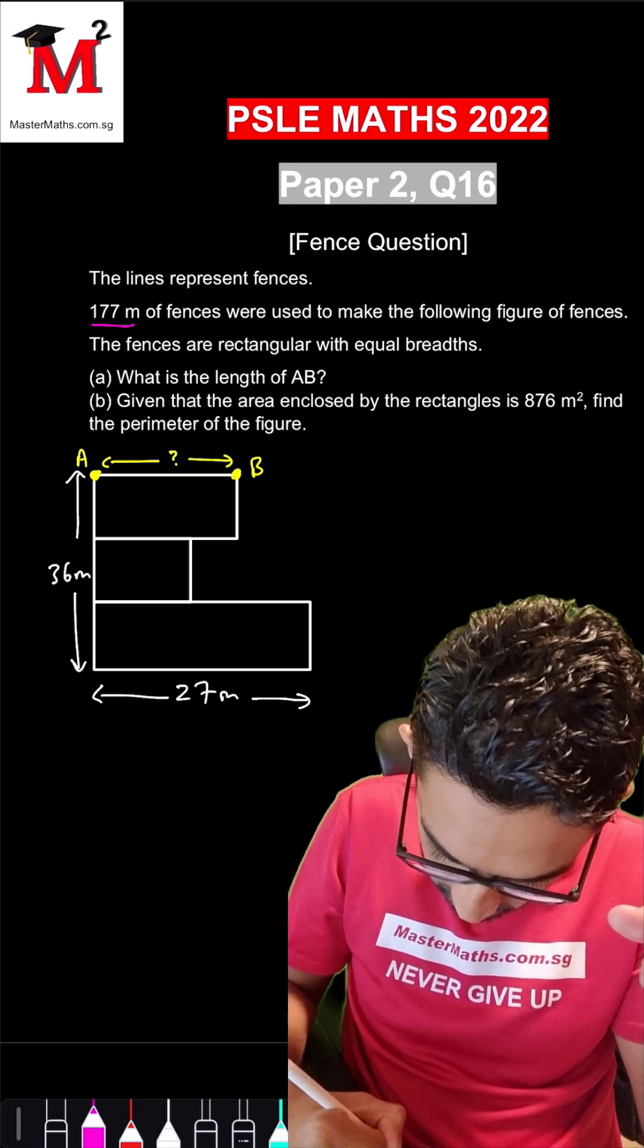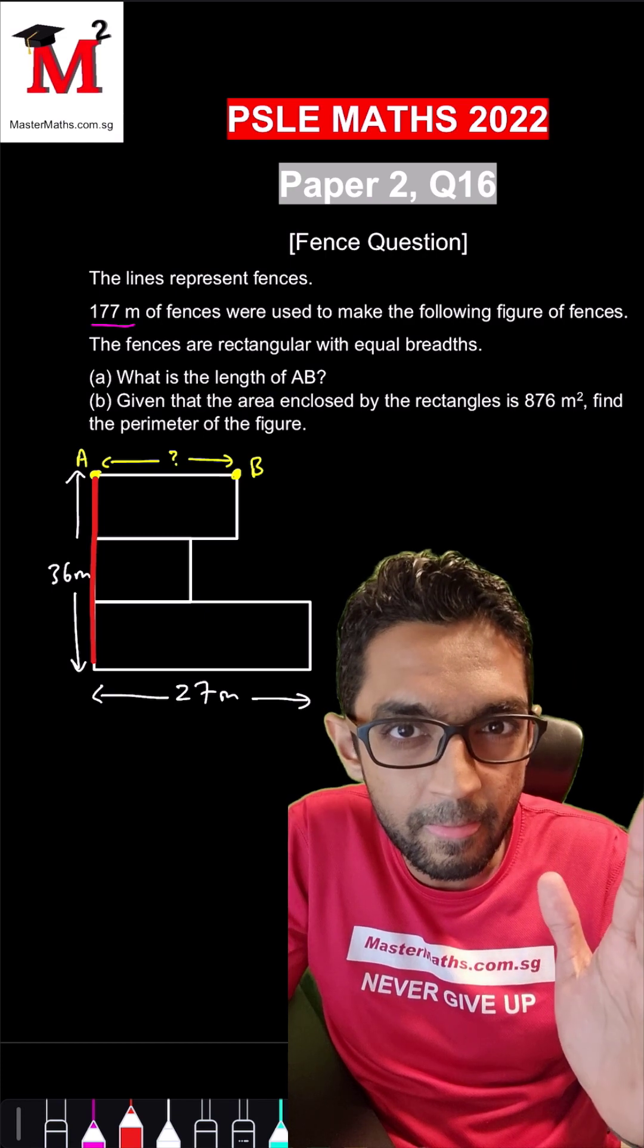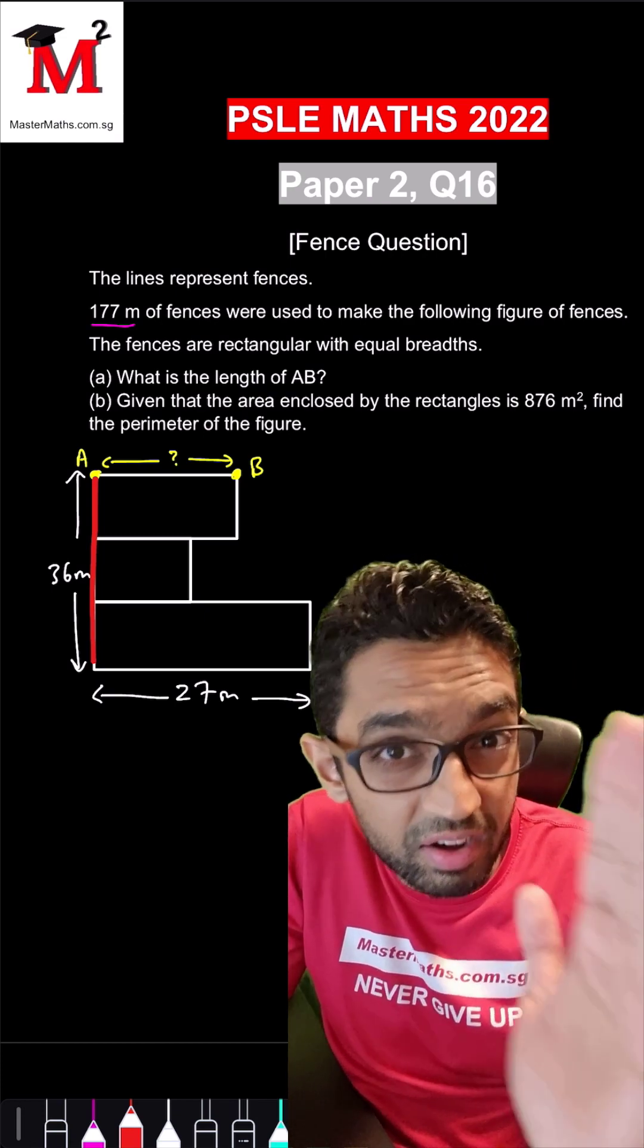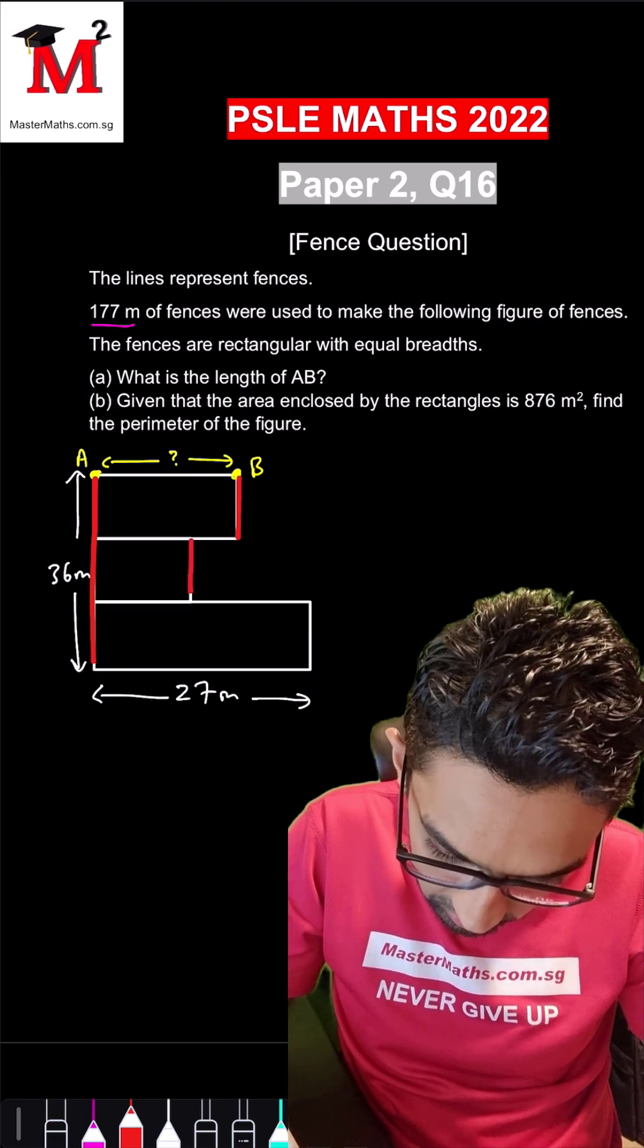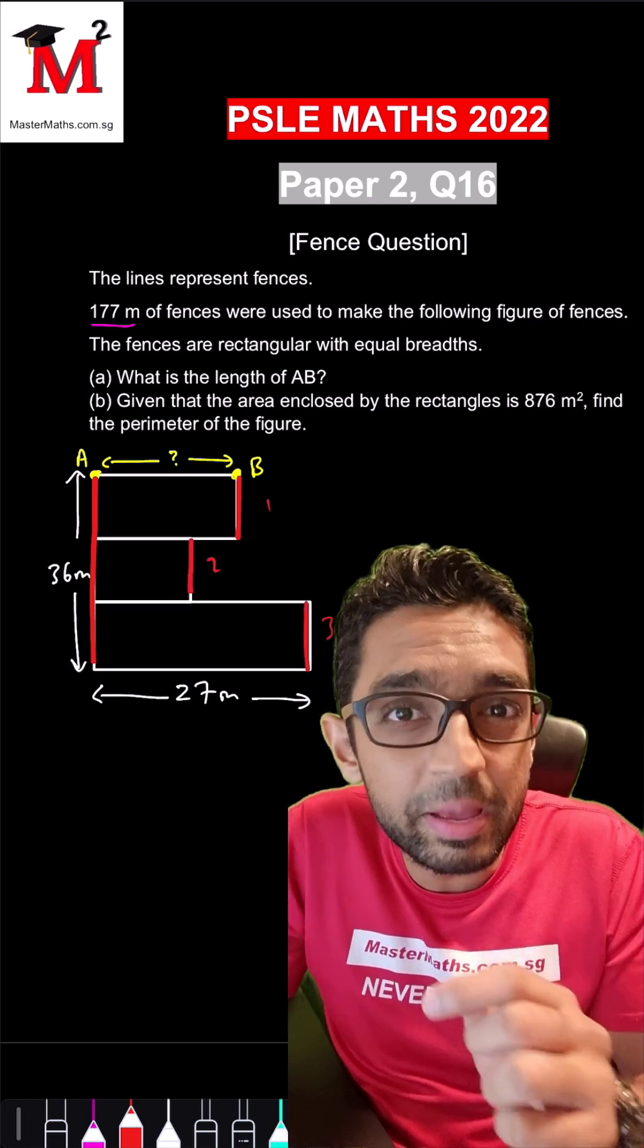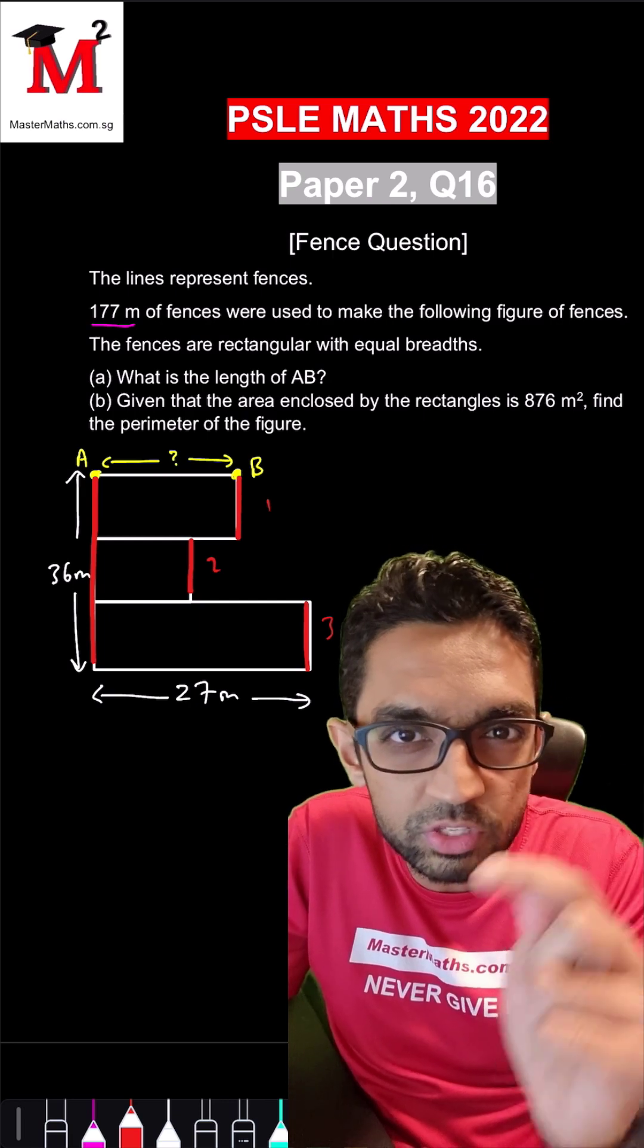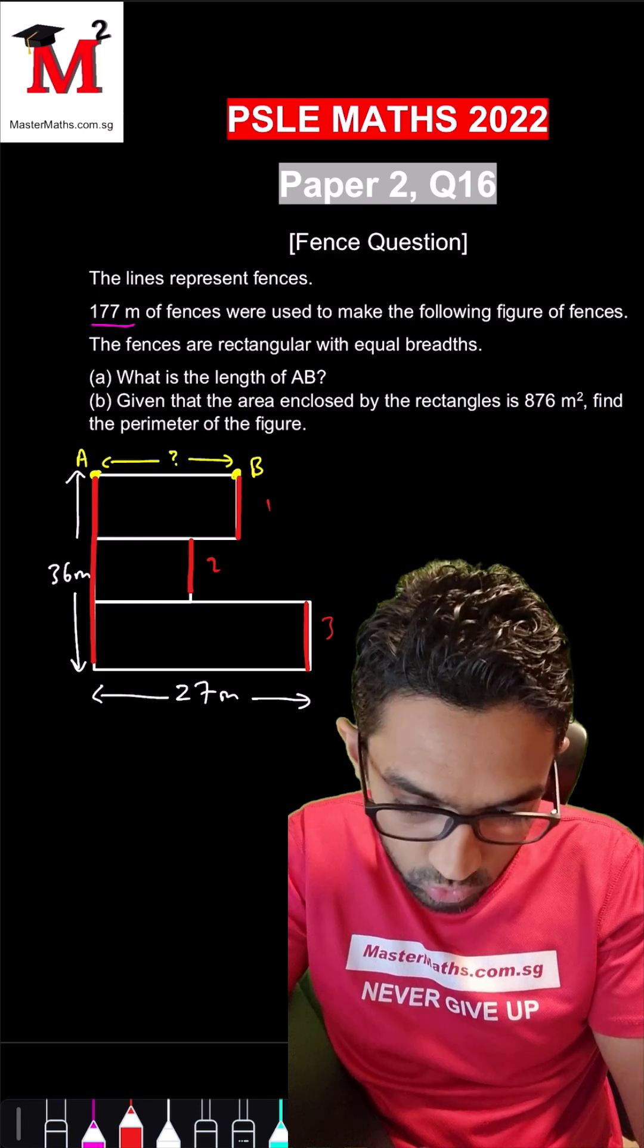The great thing about this question is that we are given 36 meters on the left side, which means if we go to the right of this figure, number one, number two, number three. What do you think will happen when you take one, two, and three and join them together? You will also get that 36 meters as well.